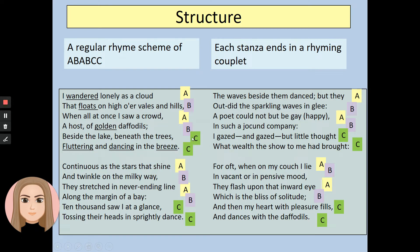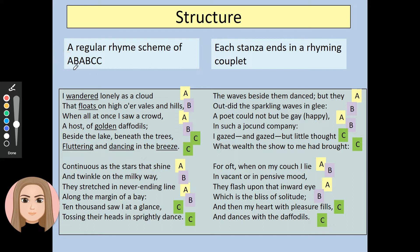The last two lines — 'trees' and 'breeze' — also rhyme, forming the two C's. That is called a rhyming couplet, because the two lines rhyme next to each other; they are coupled together at the end. So there is a regular rhyme scheme of ABABCC, and each stanza ends in a rhyming couplet.